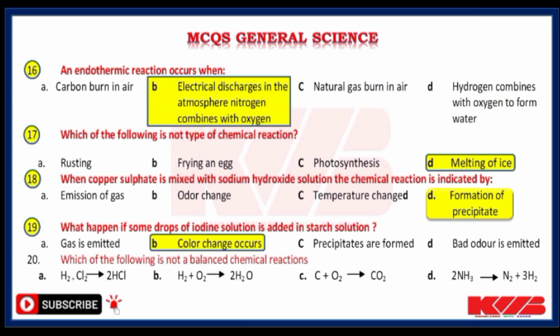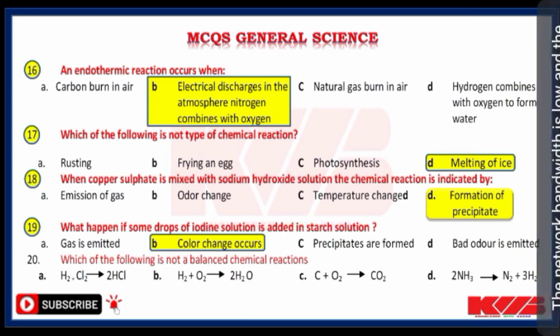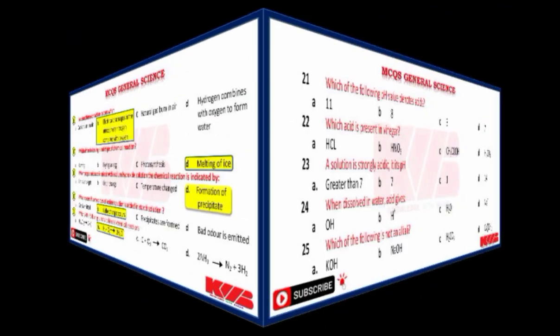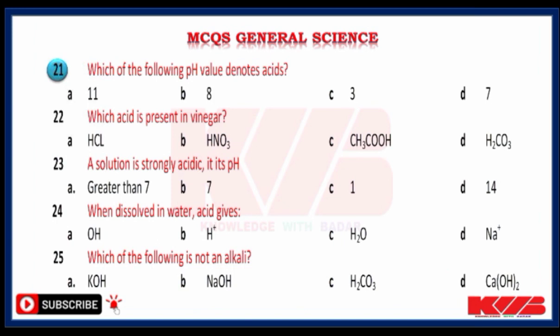Which one of the following is not a balanced chemical reaction? Looking at four reactions, which one is unbalanced? Yes, the correct answer is H2 + O2 → 2H2O. Which one of the following pH values denotes an acid? 11, 8, 3 or 7? Yes, 3.